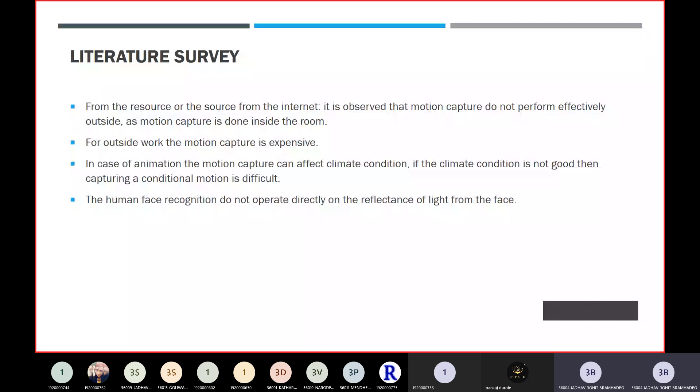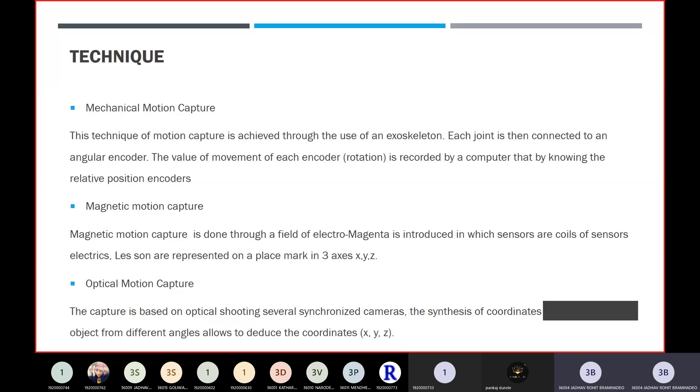The first one is mechanical motion capture. This technique is achieved through the use of an exoskeleton. Each joint is connected to an angular encoder. The value of each encoder is recorded by a computer by knowing the relative position of encoders. Basically, mechanical motion capture uses joints, so they can join one point to another point. As one point moves, all other points can figure. This is how the joints are connected and the data will be processed to capture the animation.